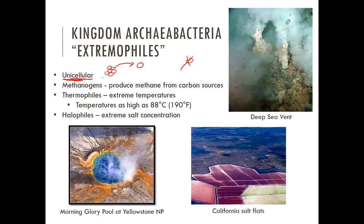One unique characteristic of Archaea is that they are methanogens, meaning they produce methane from carbon sources. A lot of them are thermophiles — a type of extremophile that can survive high or low extreme temperatures. Some can survive temperatures as high as 190°F, which would boil most other organisms. Some are halophiles, meaning they can survive extremely salty conditions. This picture shows the California salt flats, where you can see dense blooms of these cells.